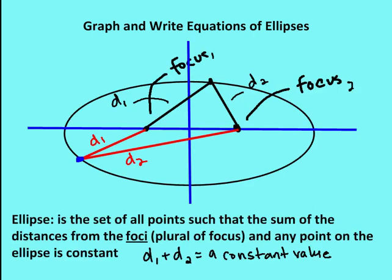So let's talk about the definition of an ellipse. The ellipse is a set of all points such that the sum of the distances from the foci — and here I've identified the two foci — is going to be constant. So a set of all points such that the sum of the distances from the foci and any point on the ellipse is going to be constant.